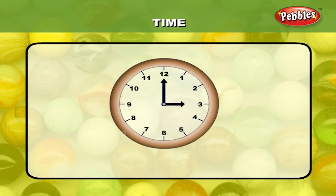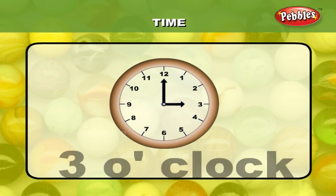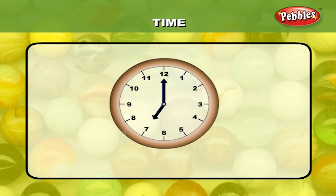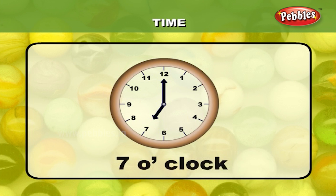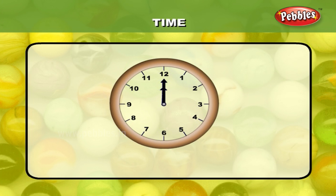In the first clock, the short hand points to three and the long hand points to 12, therefore the time is three o'clock. In the second clock, the short hand points towards seven and the long hand points towards 12, so the time is seven o'clock.